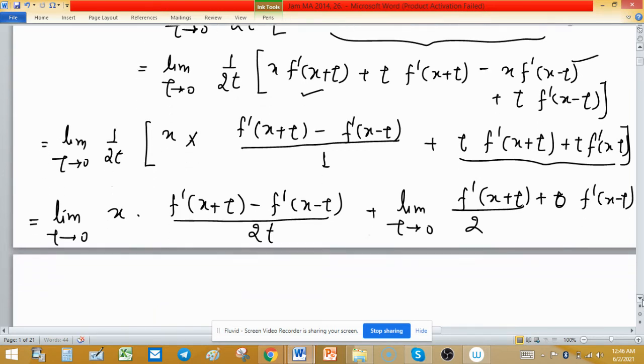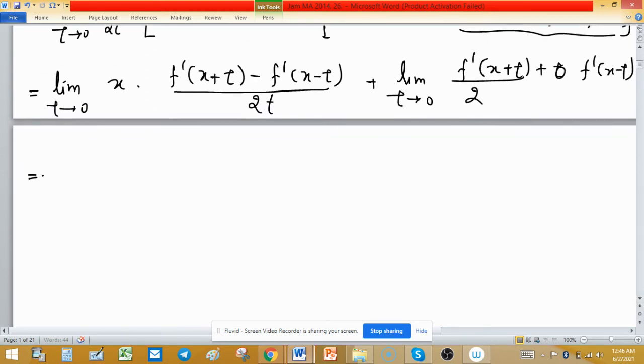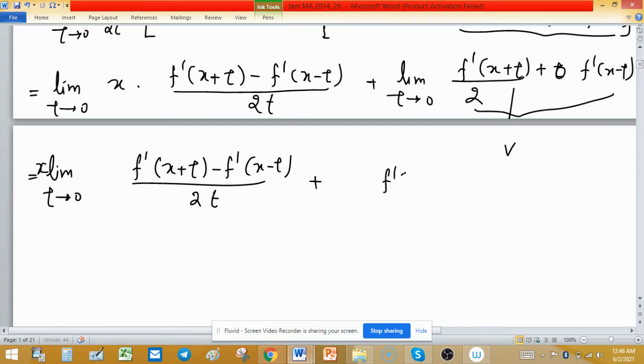You can understand better in calculation part. You can do it yourself. Limit t tends to 0, as x is free from t, so you can write in front of limiting value. And this one is f'(x+t) minus f'(x-t), divided by 2t. And this is, now, taking limit inside this expression, so it will be, as t tends to 0, f'(x) plus f'(x), divided by 2.